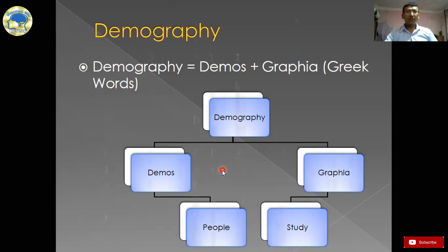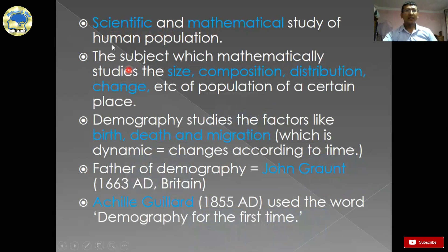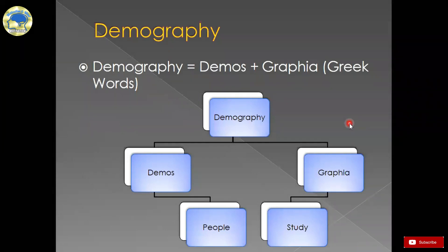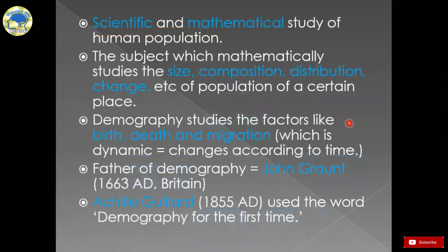If we go on to the detailed definition, we can also define it as the scientific and mathematical study of human population. I have highlighted 'scientific and mathematical study.' Why? Because Demography is a scientific study because it uses a systematic and scientific process to study about human population. And it is a mathematical study because it studies the human population in a mathematical way. Demography is the subject which mathematically studies the size, composition, distribution, changes, etc. of the population of a certain place.